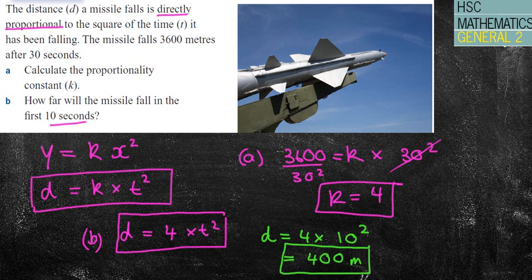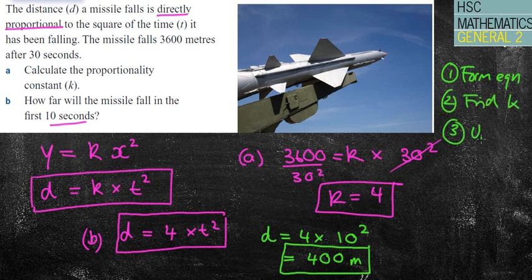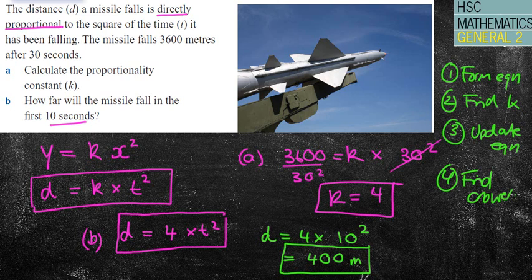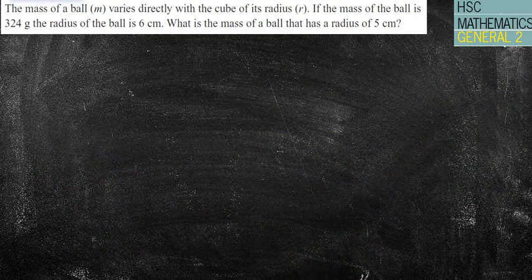So the four steps are: form the equation, find k, update the equation with k, then find your answer. That process will be the same for the next couple of questions.